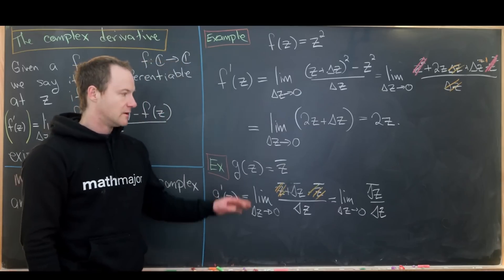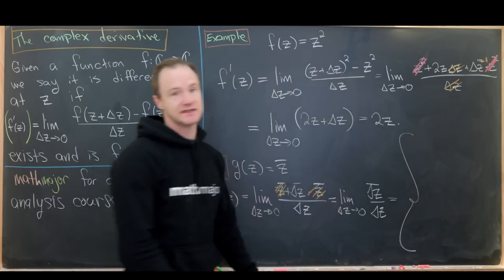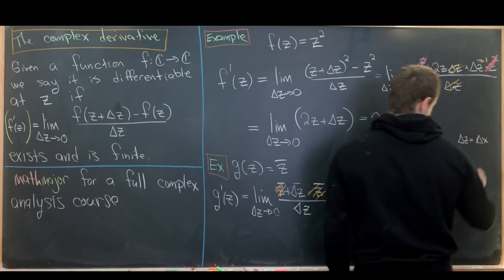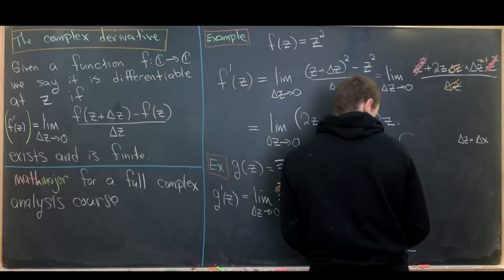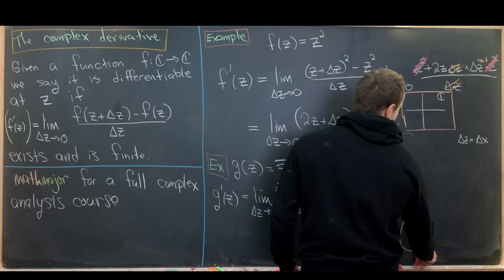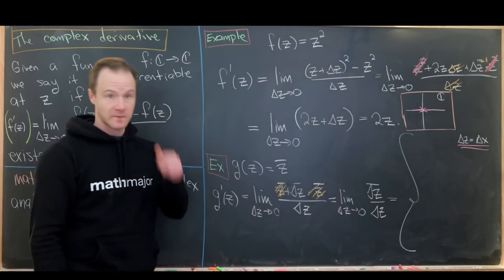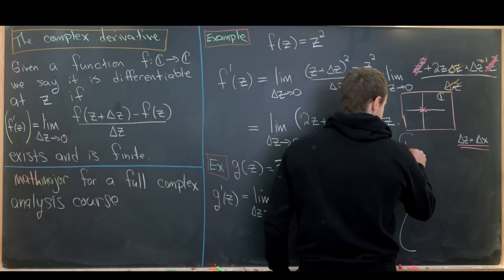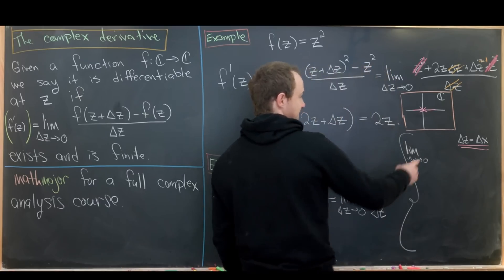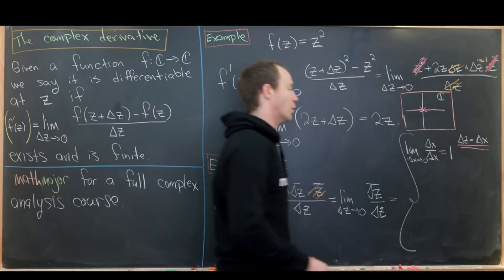We now evaluate this limit along two paths. First, approaching along the real axis: delta z = delta x, with delta y = 0. Since delta x is real, its conjugate is just delta x itself, so we get delta x / delta x = 1. Now approaching along the imaginary axis: delta z = i·delta y. Delta y is real, so taking the conjugate flips the sign of i, giving conjugate(i·delta y) = −i·delta y. So the limit becomes −i·delta y / (i·delta y) = −1.